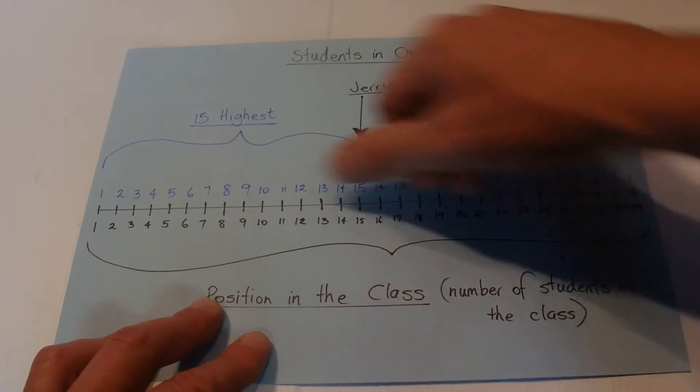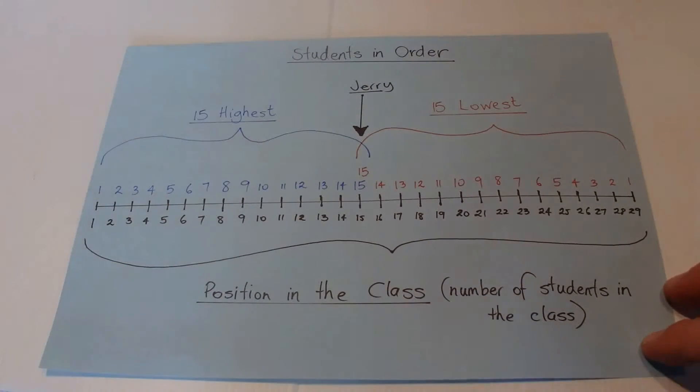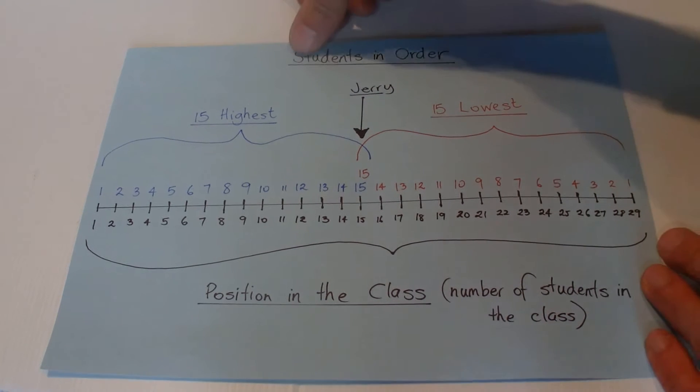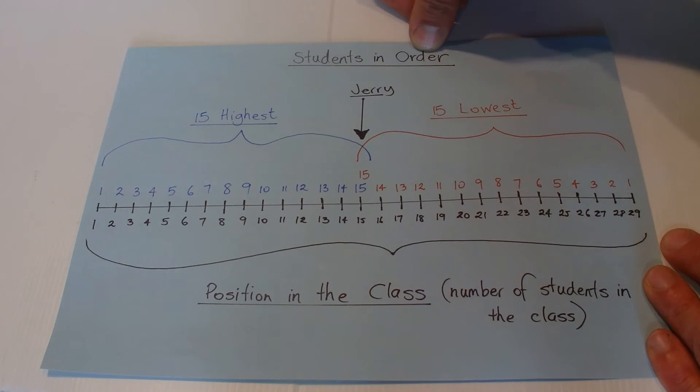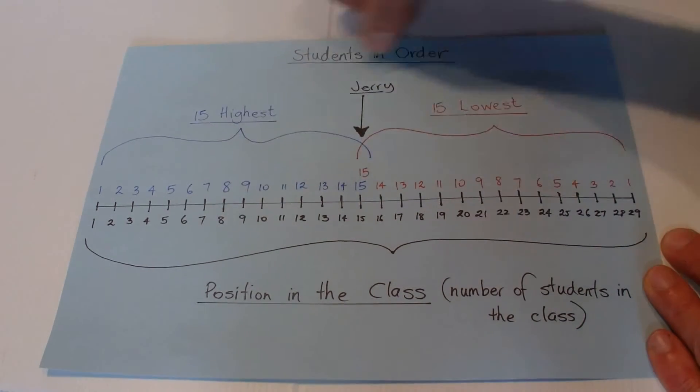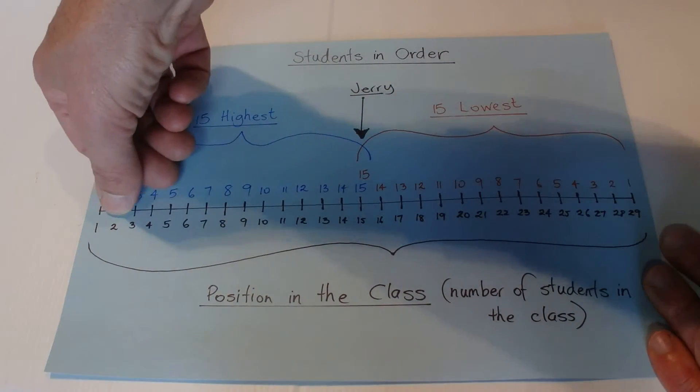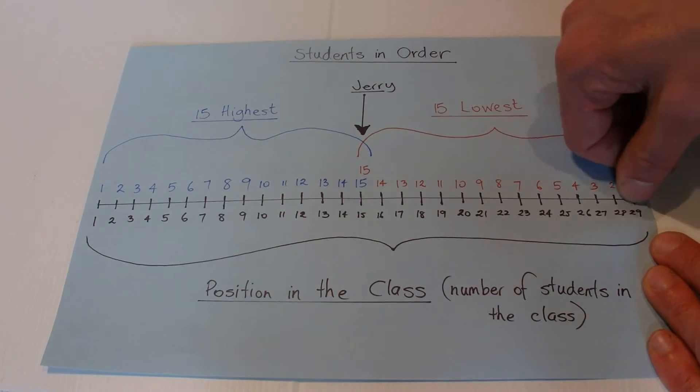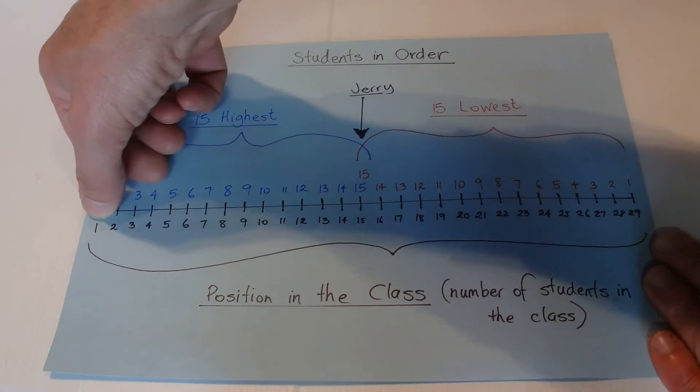I've done this grid here on this piece of paper to show you how to calculate how many students there are in the class. This shows students in order in the class by their mark in the test, with the black numbers down the bottom of this line.